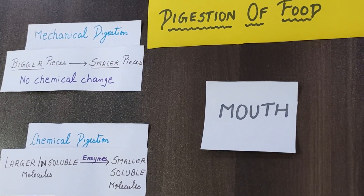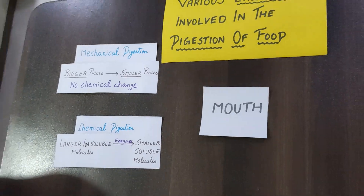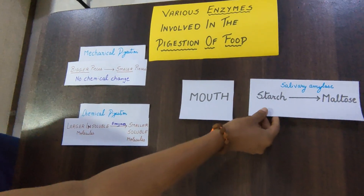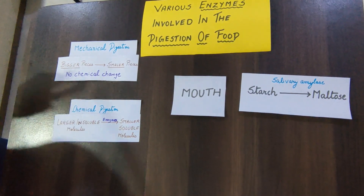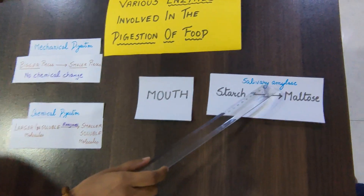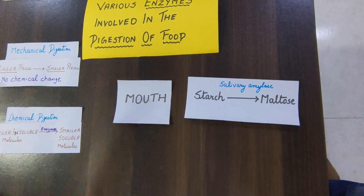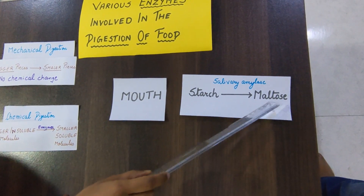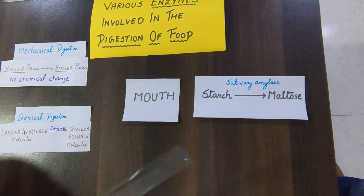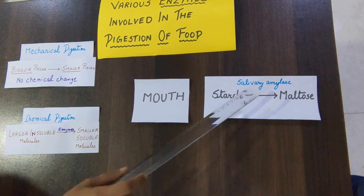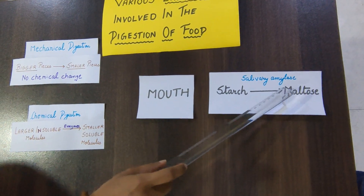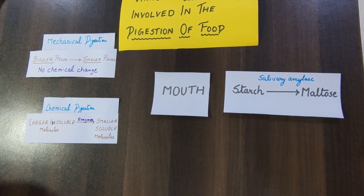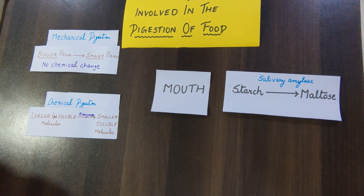In the mouth we have an enzyme by the name of salivary amylase, which is going to convert starch to maltose. It is called salivary amylase because it is secreted by the salivary glands.